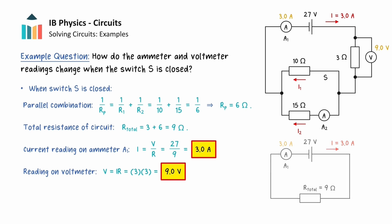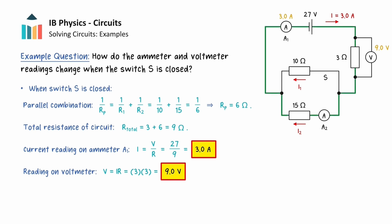Finally, to calculate the reading on ammeter 2, we can consider the green loop around the circuit and use the loop rule, which states that the total gains in electrical potential difference is equal to the total losses of electrical potential difference in the closed loop.